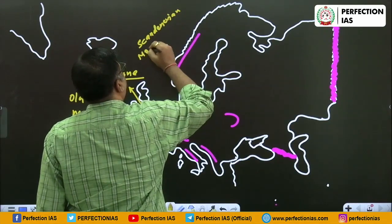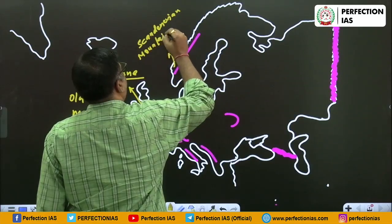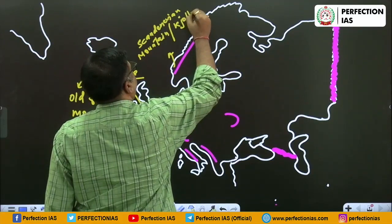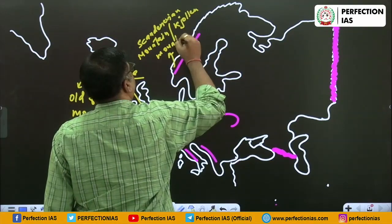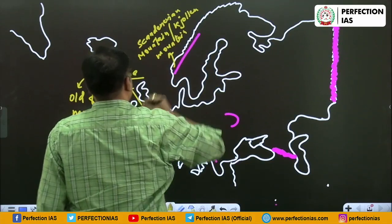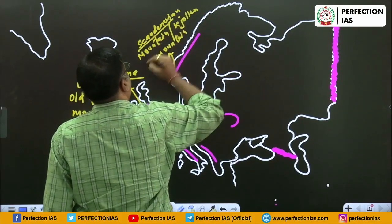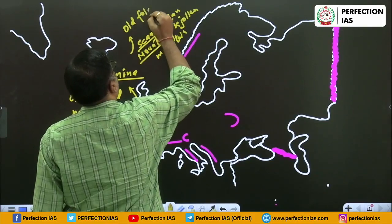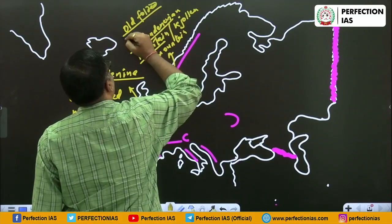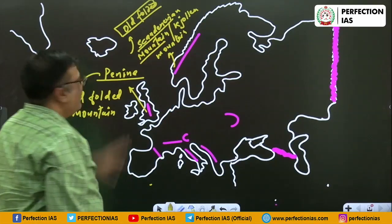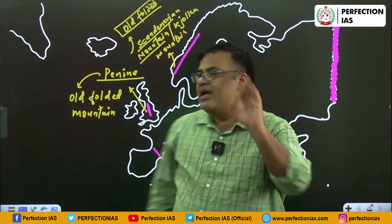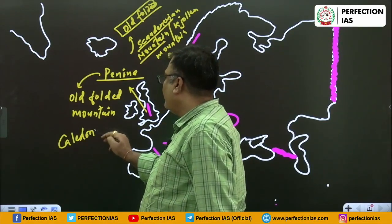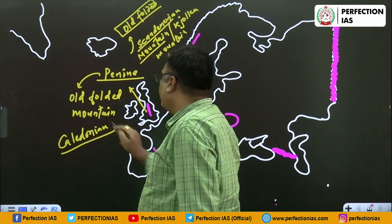Here it is the Scandinavian Mountain, also called the Norzolland Mountain. This is also old folded. Remember - if they ask about the age in steady state, it is old folded; otherwise these are all Caledonian mountains.